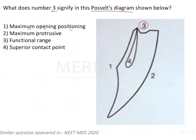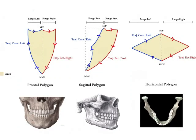The diagram includes: maximum opening position, maximum protrusive, functional range, and superior contact position. Most of us get confused with mandibular movements, so let me revise this briefly. The easiest way to remember is with three diagrams: first is a shield shape, second is a beak shape, and third is a rhombus.